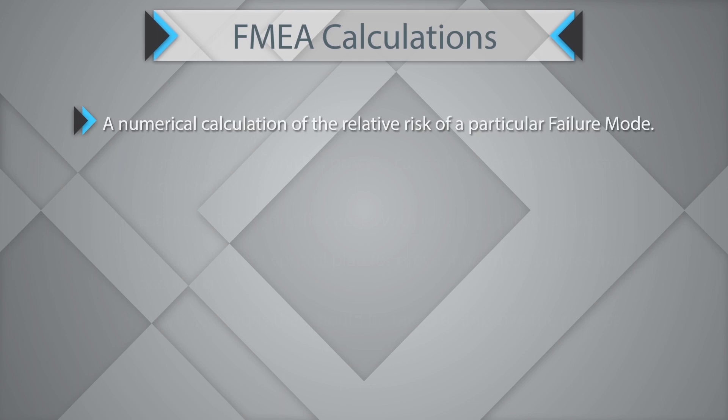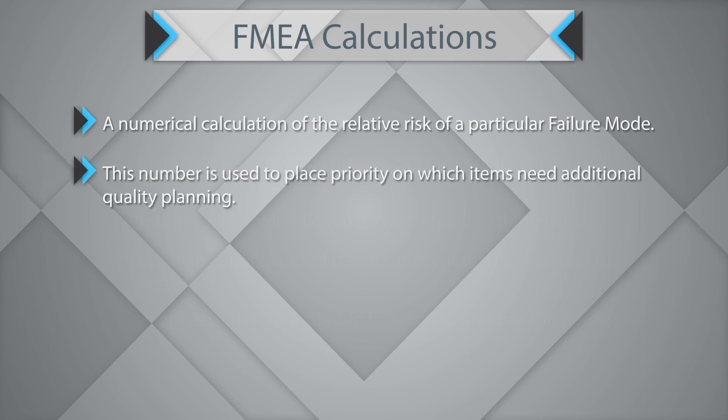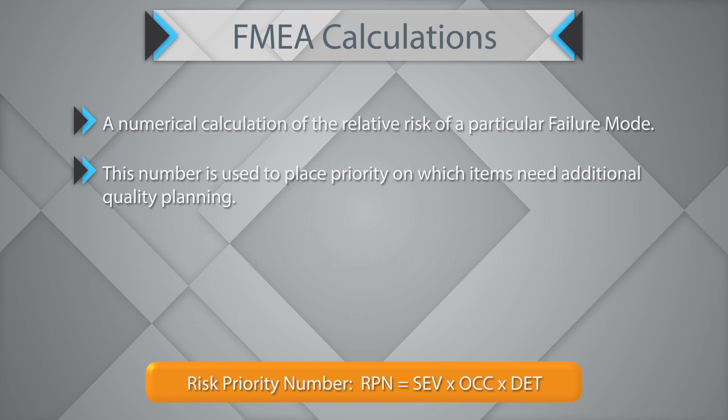Risk rating is a numerical calculation of the relative risk of a particular failure mode. The number is used to place priority on which items need additional quality planning. The Risk Priority Number, or RPN, is nothing but Severity multiplied by Occurrence multiplied by Detection.